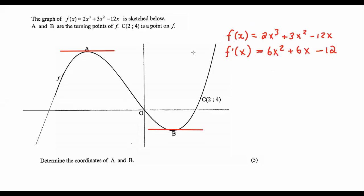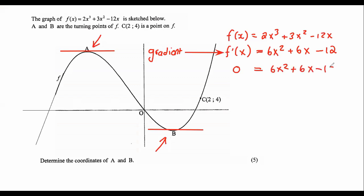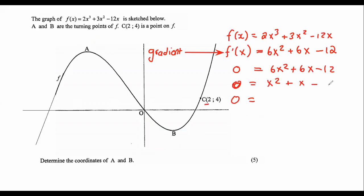Remember that the first derivative is just another name for gradient. At the turning points, the gradient is zero, so we set 6x² + 6x − 12 equal to zero. You can solve this however you like — factorize or use the quadratic formula. I'm going to divide everything by 6 to get x² + x − 2, which factorizes nicely as (x + 2)(x − 1).